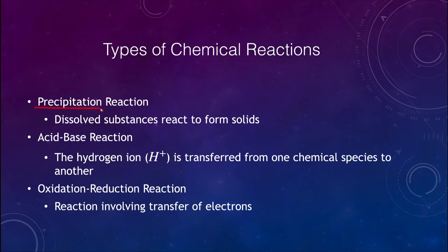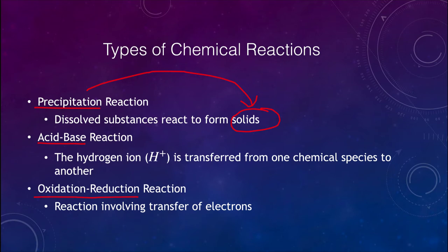The three types we'll cover are precipitation reactions, acid-base reactions, and oxidation-reduction reactions. In a precipitation reaction, substances dissolved in water react together to form solids that precipitate out. In an acid-base reaction, a hydrogen ion is transferred from one chemical species to another. And in an oxidation-reduction reaction, we look at the transfer of electrons between various atoms and molecules.